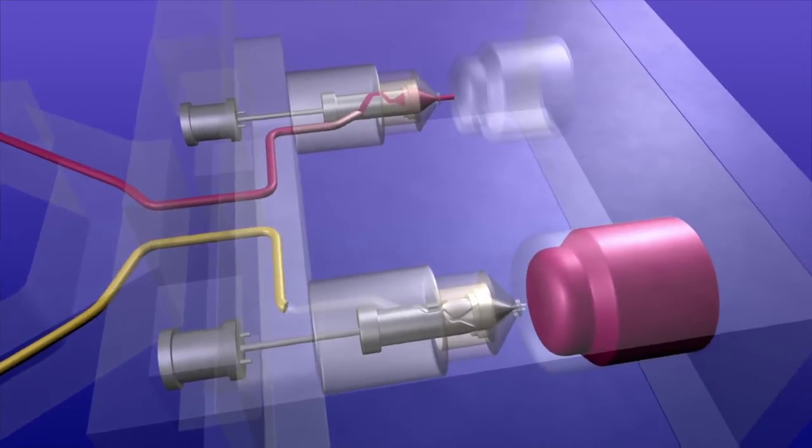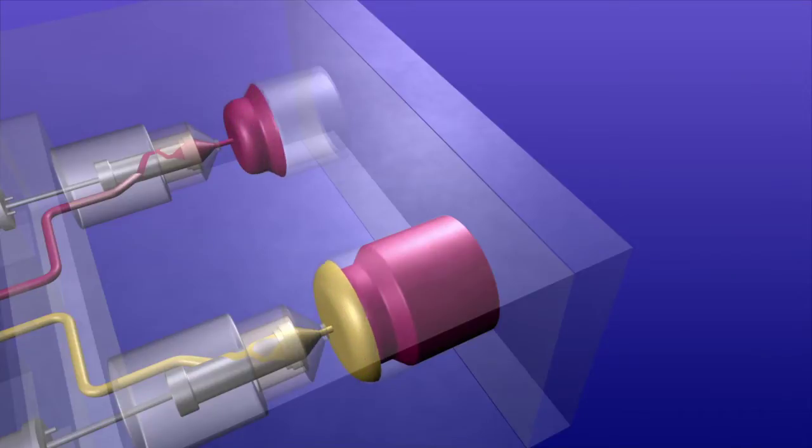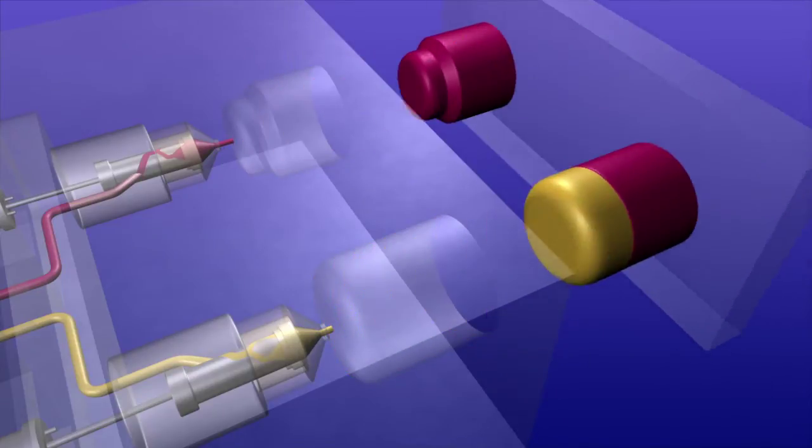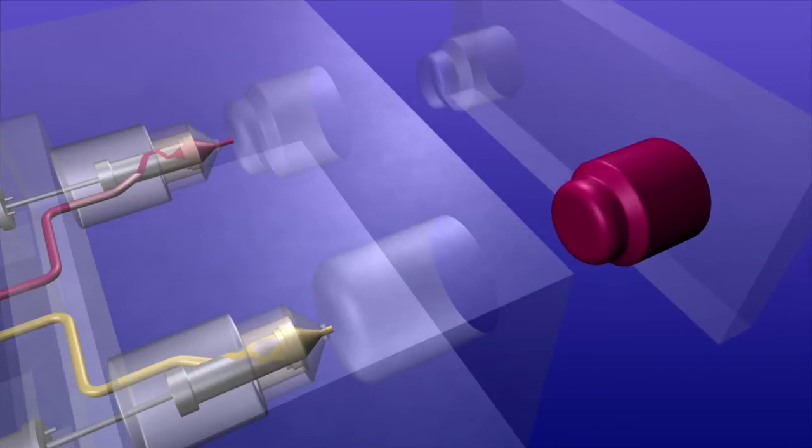Overmolding lowers total cost because it reduces the number of steps involved in making a product. Instead of using one machine for one material, Bemis with a quick two-second flip of the mold combines multiple steps into a single injection molding process.